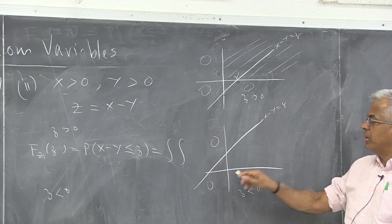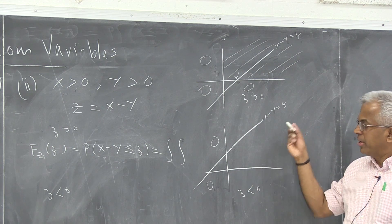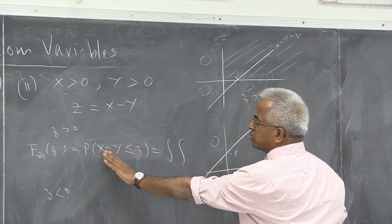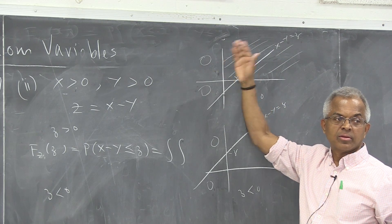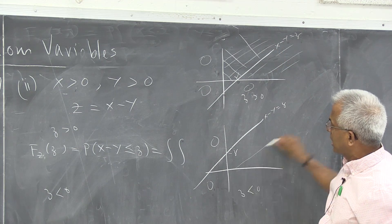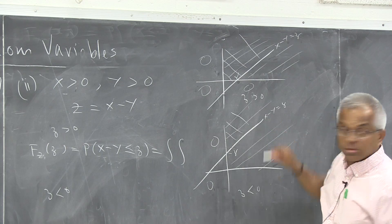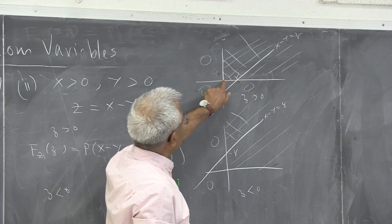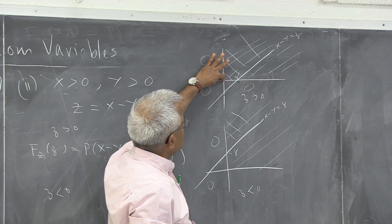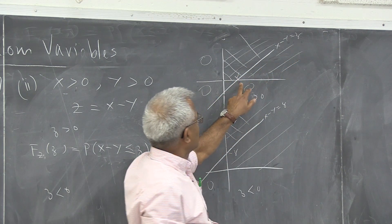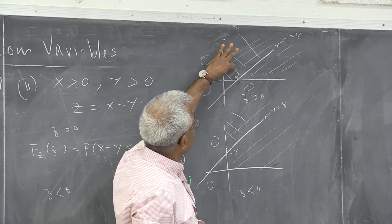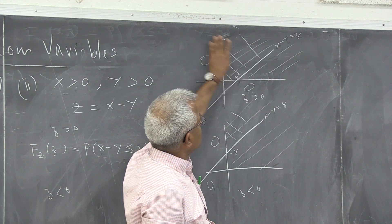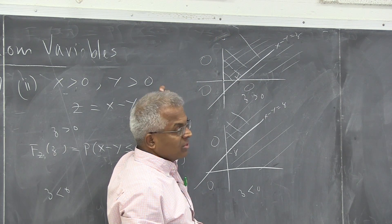What is this point? You put x equal to 0, so y is minus z. We need to find the region where x minus y is less than or equal to z. We integrate over this region — it is to the left of and below the line. To verify, take the point (0, 0): for z positive, say z equals 2, 0 is less than 2, so this point is satisfied.